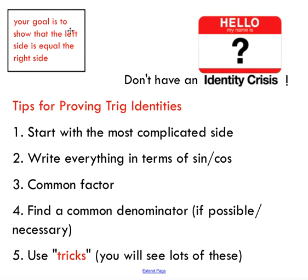Number three, common factoring. This is huge. If you are not familiar with common factoring, you cannot really be successful at trig identities if you're not a strong common factor.